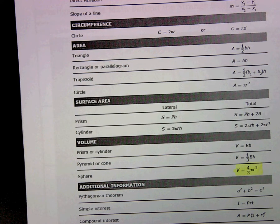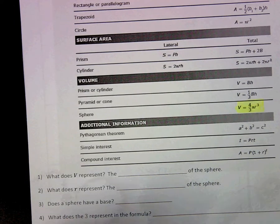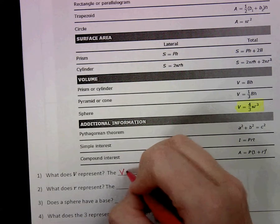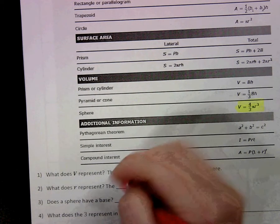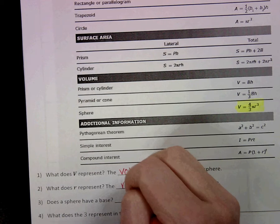So the V represents our volume. So the volume of the sphere. The R represents the radius of the sphere.